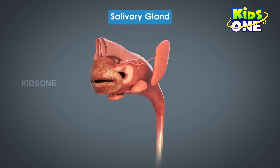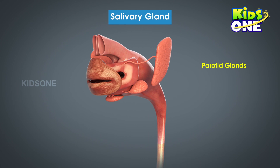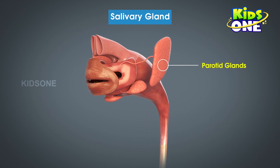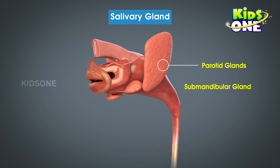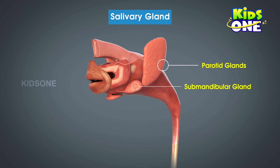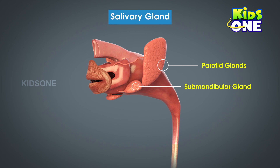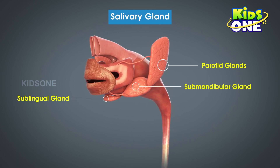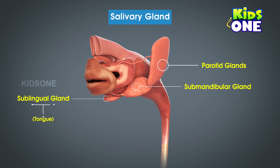The salivary glands are a collection of three pairs of glands. The parotid glands are situated roughly around the upper cheeks. The next are the submandibular glands, located on either side of the lower jaws. The third pair are the sublingual glands. The term 'lingual' refers to speech or tongue, so one can easily say that this pair is located in the region below the tongue.